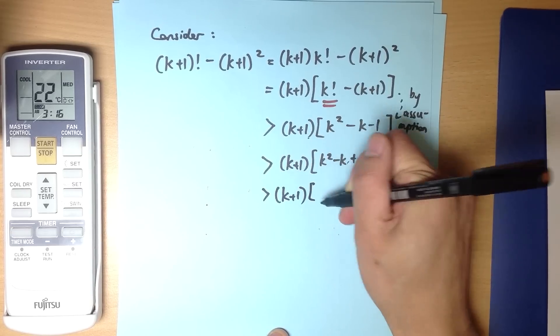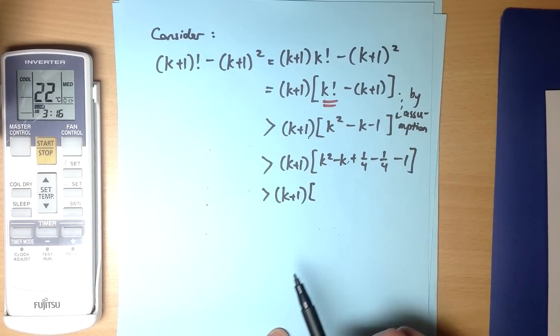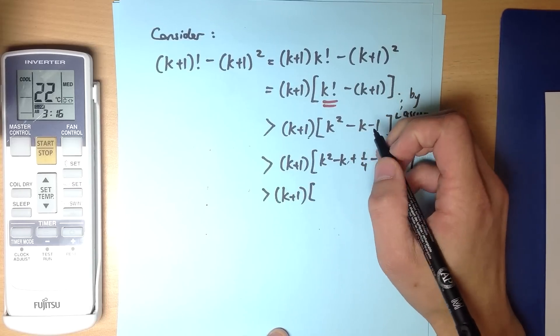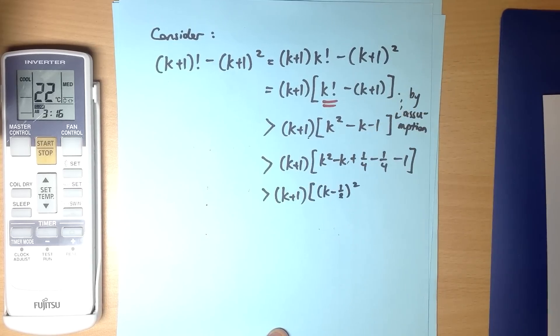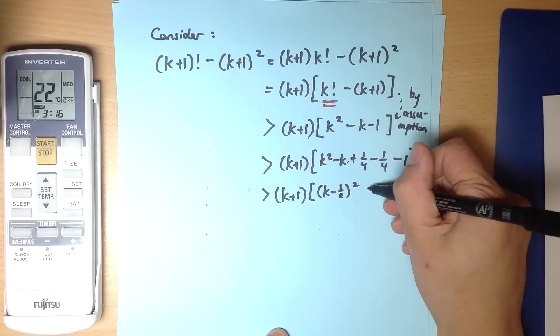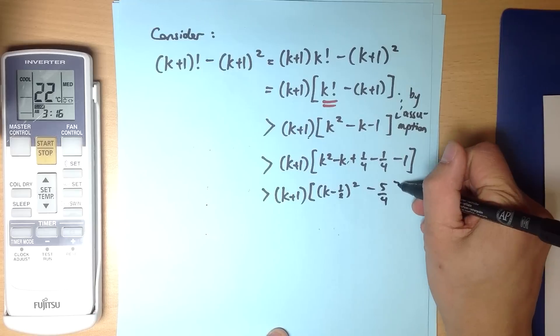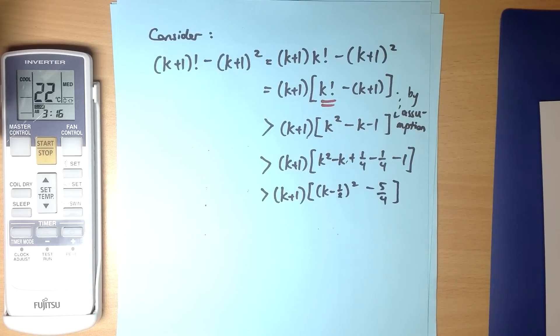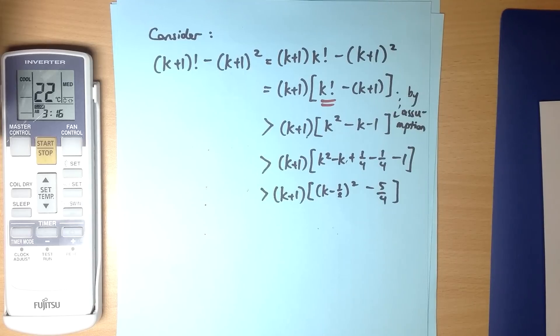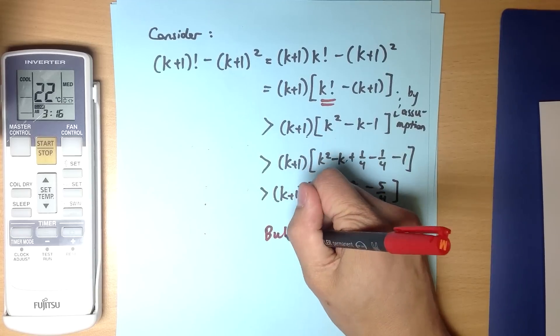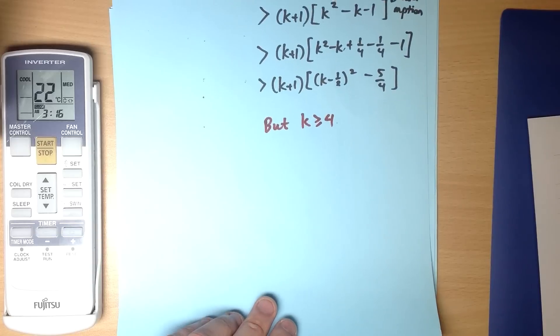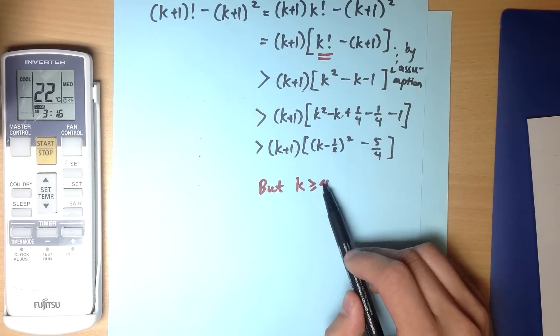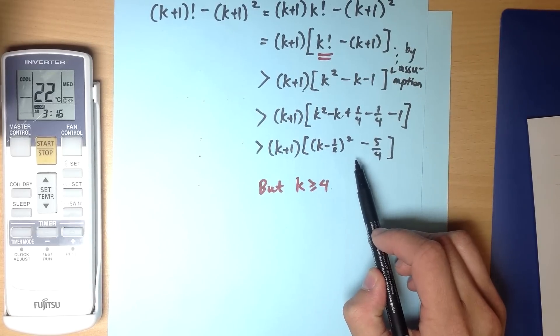So now this allows me to factorize these terms here as (k - 1/2)², that minus a quarter and that minus 1, that's minus 5/4. Now this is what I've got so far. This doesn't look like it's any use to us, but actually it's very useful because I can say, but k is greater than or equal to 4, that's one of the conditions I set on this number. So I'm going to try and move from this to this and make some conclusions about it.